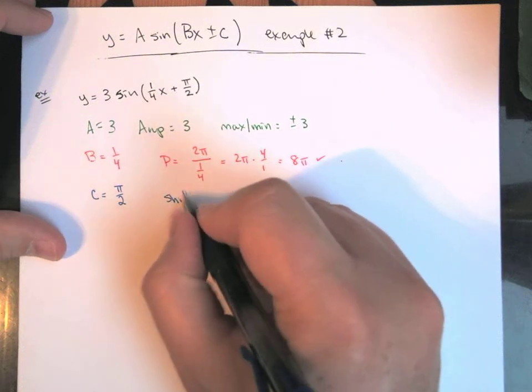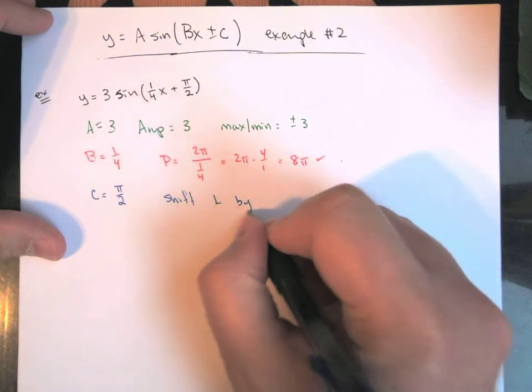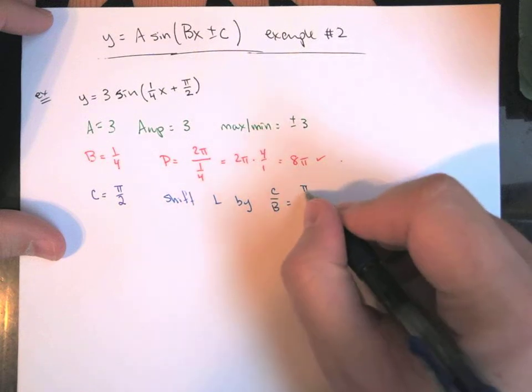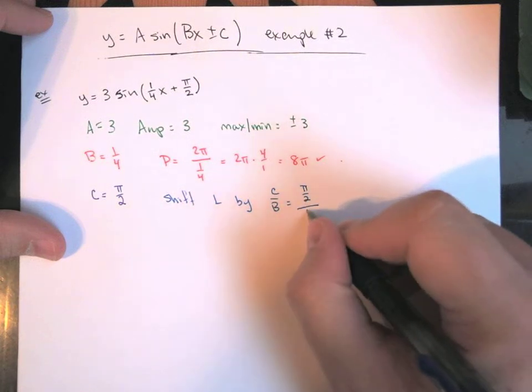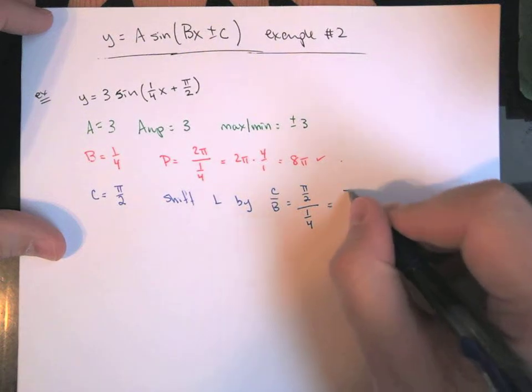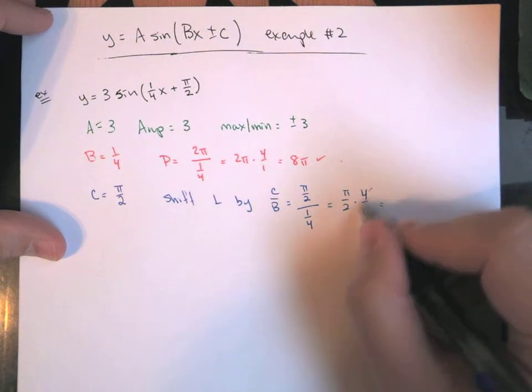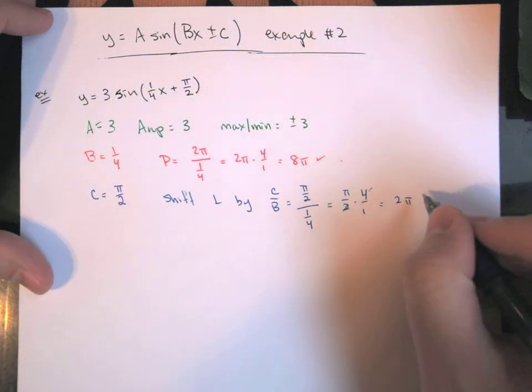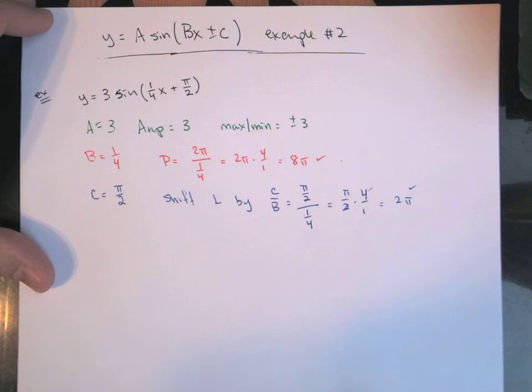So this is going to be a shift left by C over B, so π over 2, and then that's divided by one quarter. So that's a stack, right? But we're going to flip and multiply, and so this ends up, the π over 2 times 4 over 1, this is going to end up being a shift to the left by 2π.